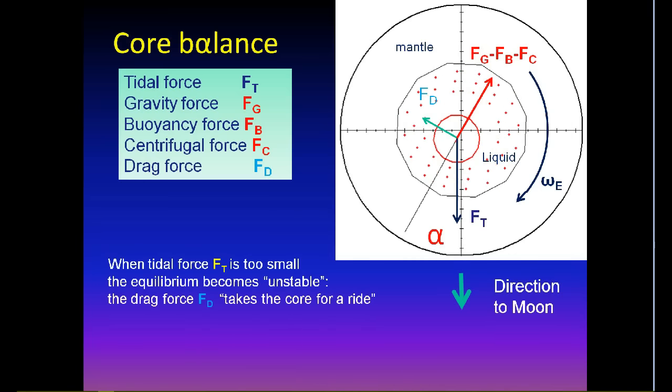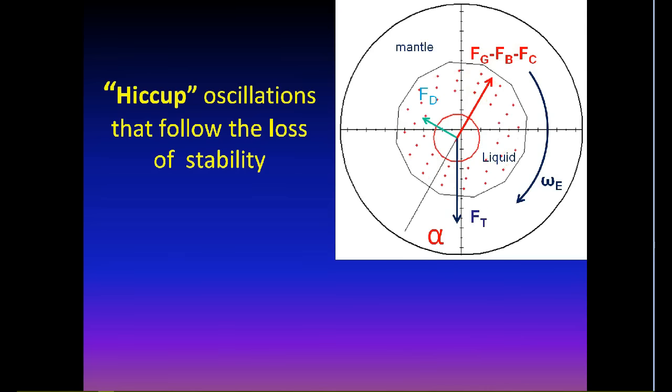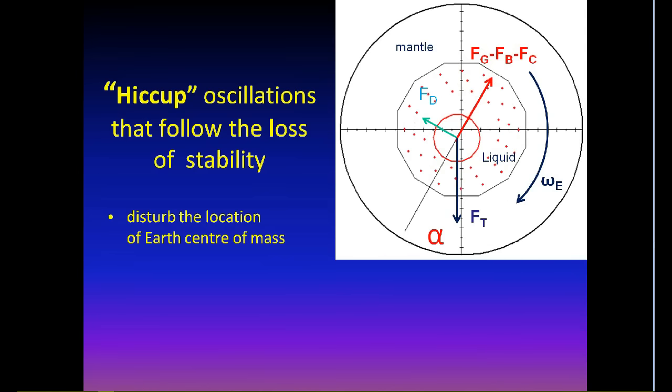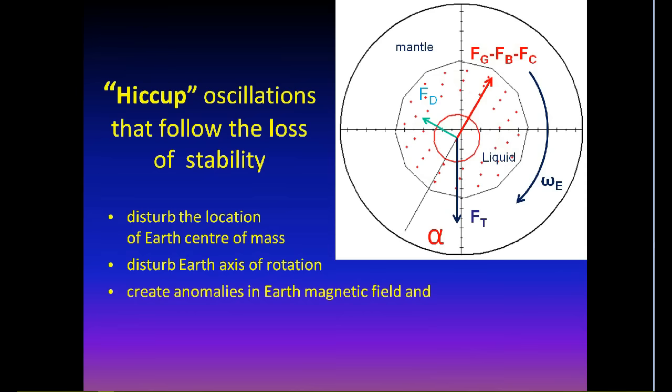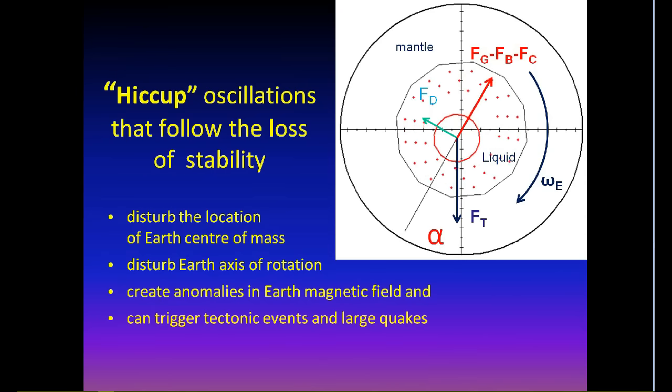When tidal force, Ft, is too small, the core equilibrium becomes unstable, and the drag force, Fd, takes the core for a ride. Phenomenon of stability loss in hydrodynamic bearings caused by insufficient transverse load is very well known in rotodynamics. Hiccup oscillations that follow the loss of stability of the core have several consequences. They disturb the location of the Earth's center of mass. They disturb Earth's axis of rotation. They create anomalies in Earth's magnetic field. And they can trigger tectonic events in large earthquakes.